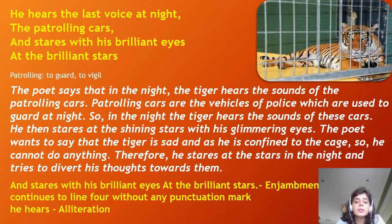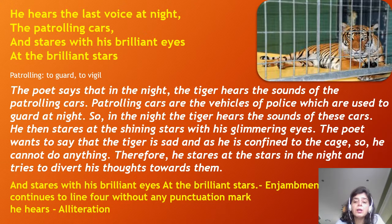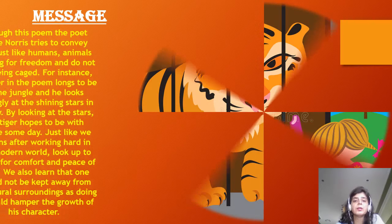The line 'stares with his brilliant eyes at the brilliant stars' continues from the third to the fourth line, so the poetic device used is enjambment. Also, 'he hears' — the 'h' sound is repeated, so the poetic device used is alliteration.